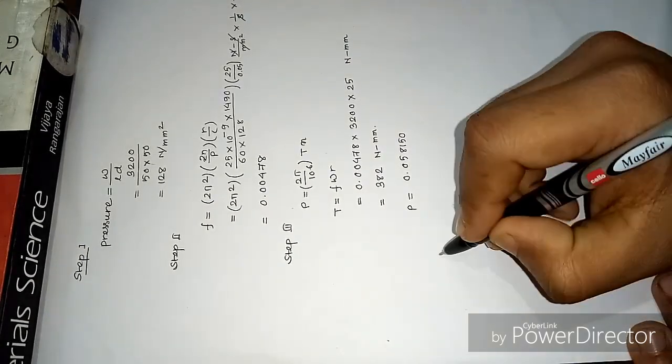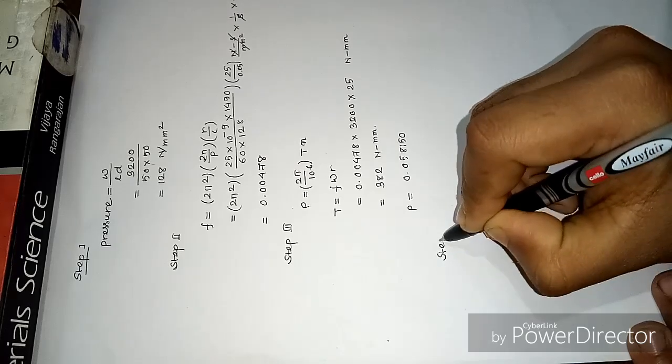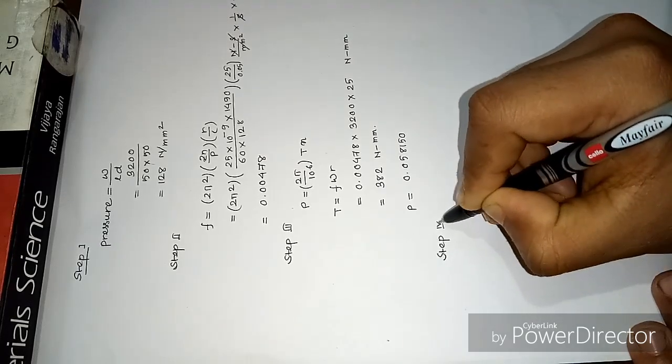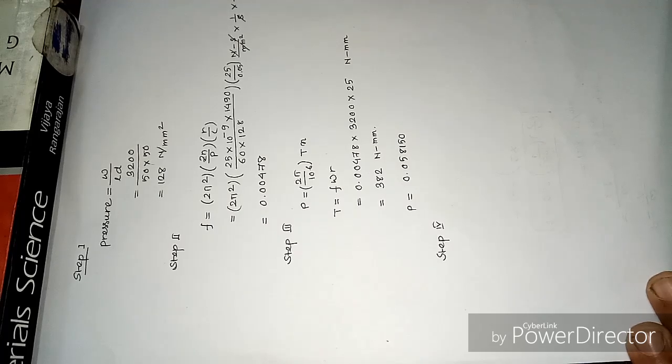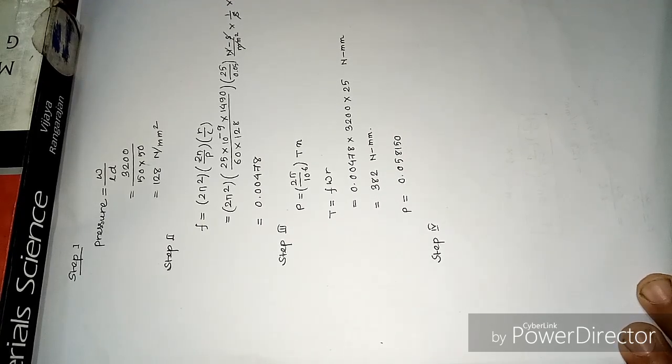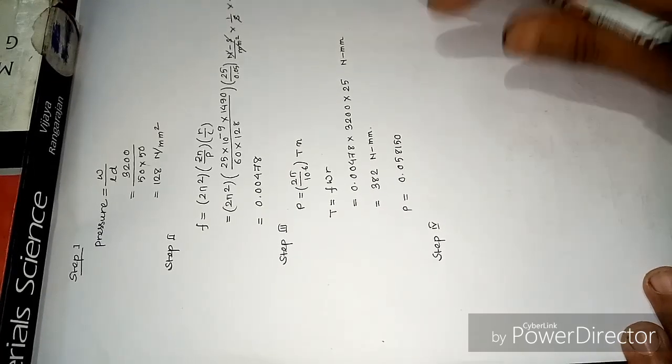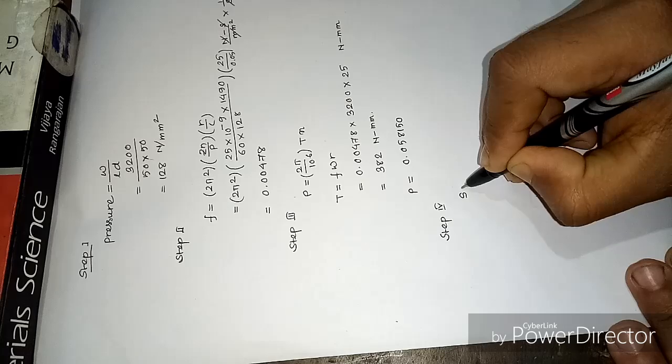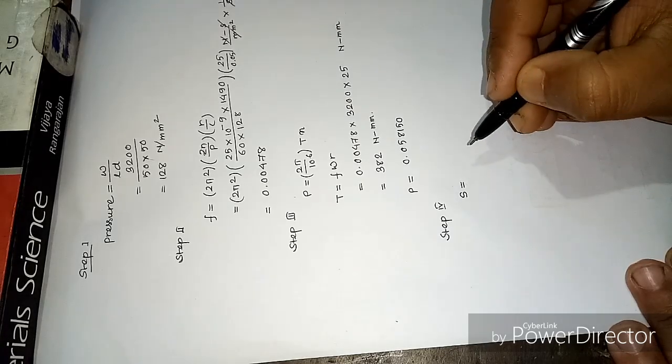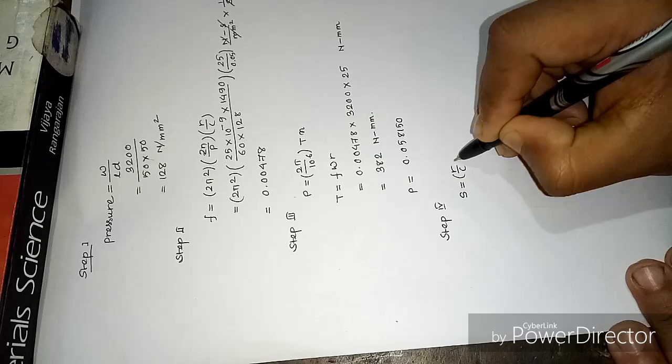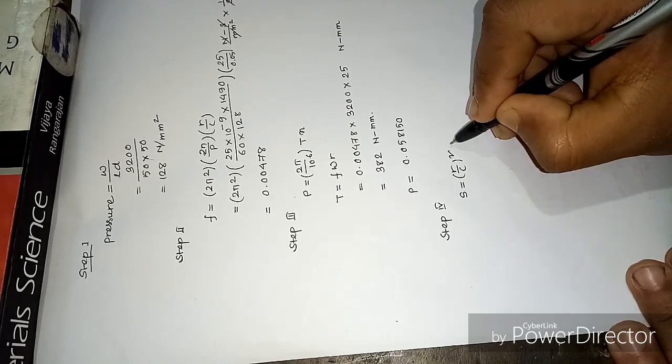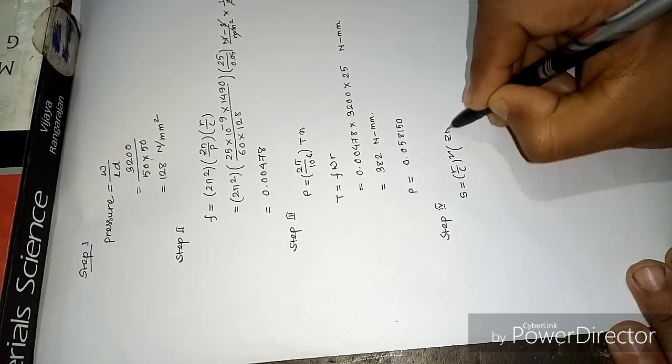Step 4: we have to determine the minimum oil film thickness. To determine this, we have to first calculate the Sommerfeld number. It is given by R by C whole square Z N by P.